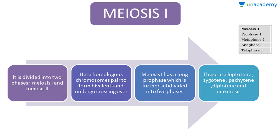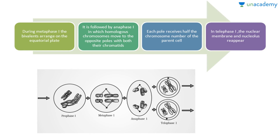Meiosis is broadly divided into meiosis I and meiosis II. Meiosis I is divided into prophase I, metaphase I, anaphase I, and telophase I. In meiosis I, homologous chromosomes pair to form bivalents and undergo crossing over. Meiosis I has a long prophase I which is further subdivided into five phases: leptotene, zygotene, pachytene, diplotene, and diakinesis.